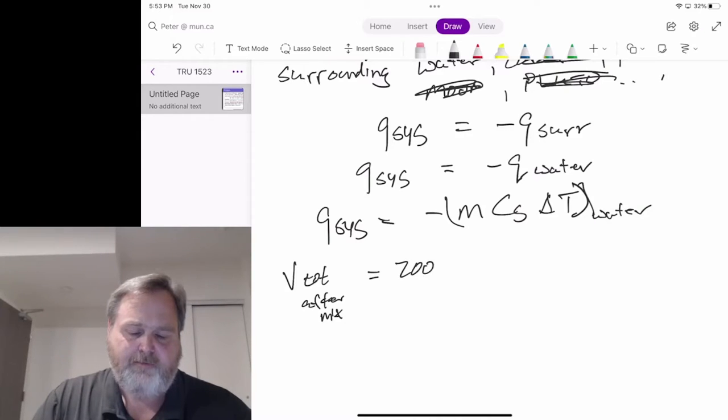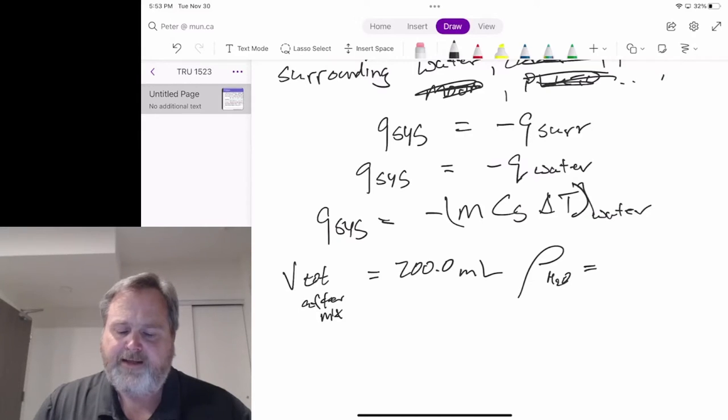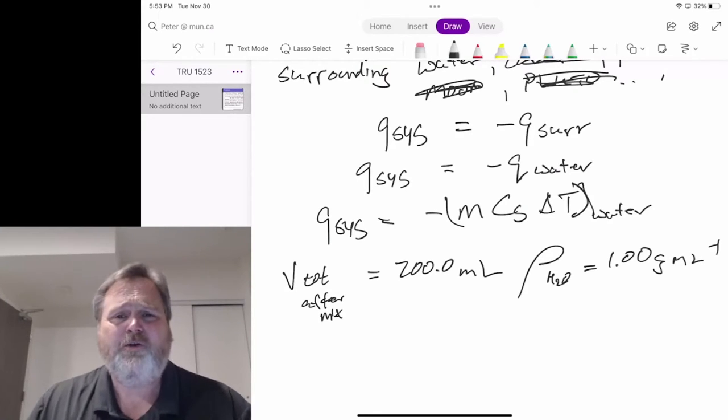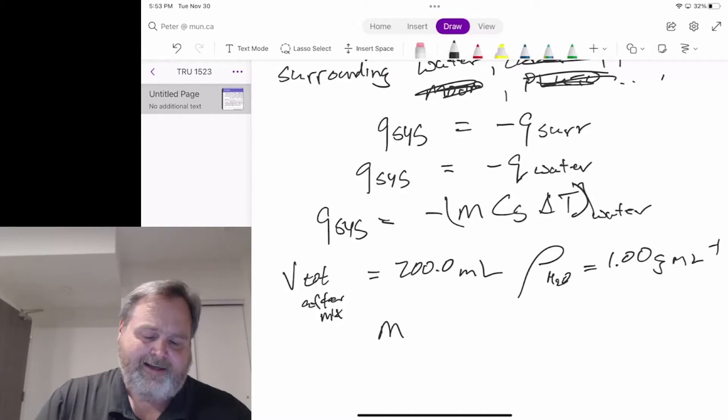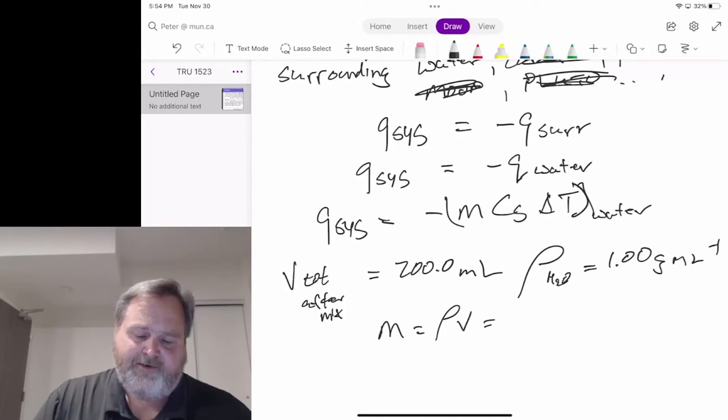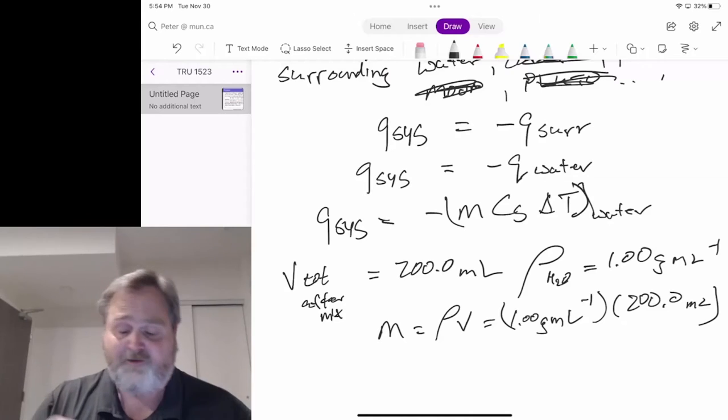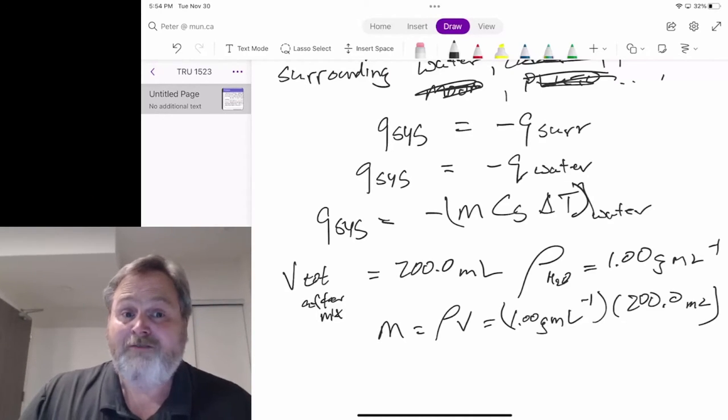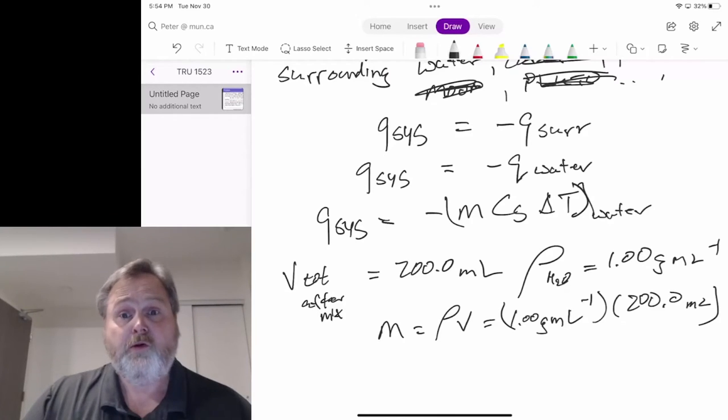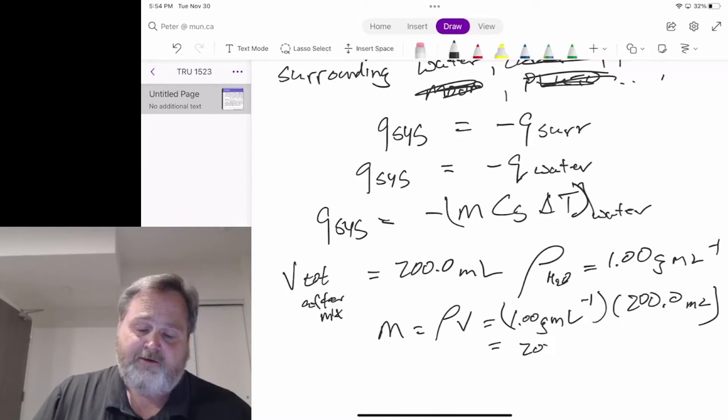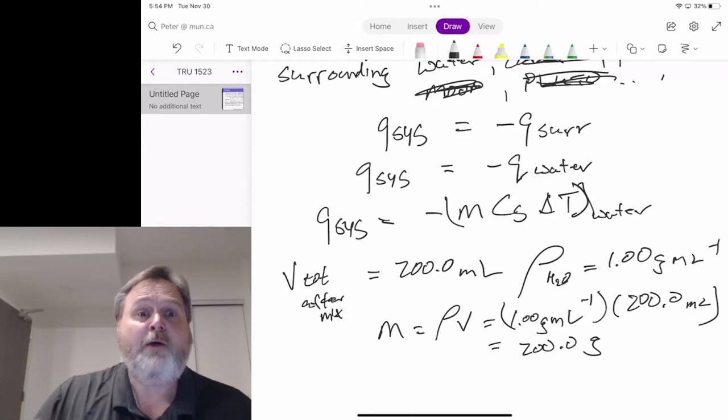We don't have a mass, but what we do have is a total volume of solution after mixing. That's 200.0 milliliters. The density of water is 1.00 grams per milliliter. So mass equals density times volume. That's going to be 1.00 g/mL multiplied by 200.0 milliliters of net solution. That's 200.0 grams of water. So now we have the mass.